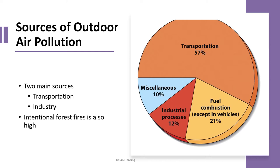In the developing world, where fuel is combusted for primary energy, this number is obviously larger. Coal combustion in South Africa is also a significant factor. Industrial processes account for about 12%, and miscellaneous sources — including intentional or unintentional forest fires like the recent Cape Town mountain fire — make up the rest.